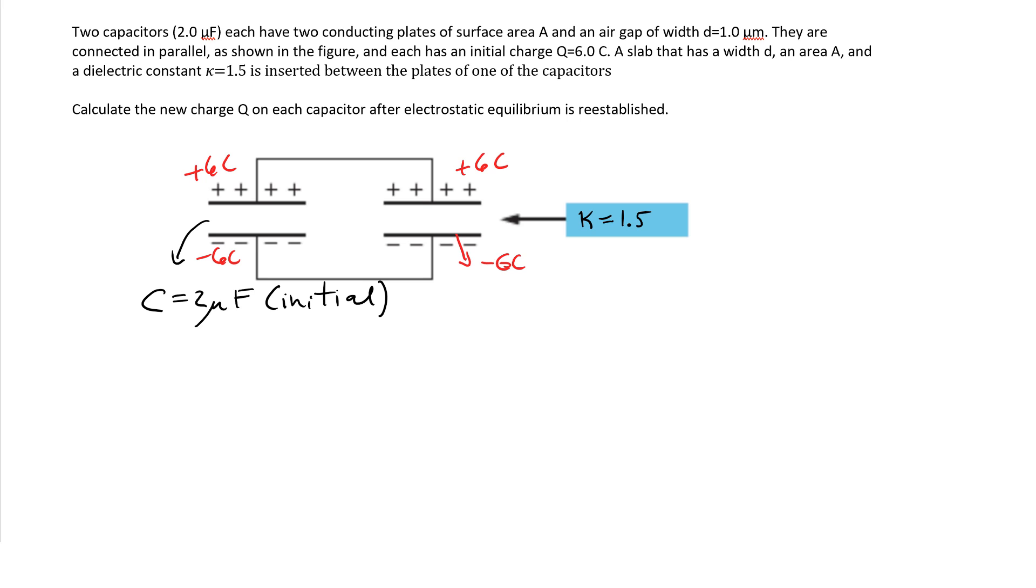I've written it in red here showing the thickness of the capacitor. Originally they're all air-filled, and then I'm going to insert a dielectric with a dielectric constant equal to 1.5 into one of the capacitors. The question is what is the new charge on the plates at the end? Here's the initial charge but what happens after I insert this dielectric constant?